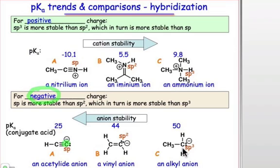We know that the stability of the anion increases for sp hybridization, and it's least stable for sp3 hybridization. And so we see that reflected in the pKa values.